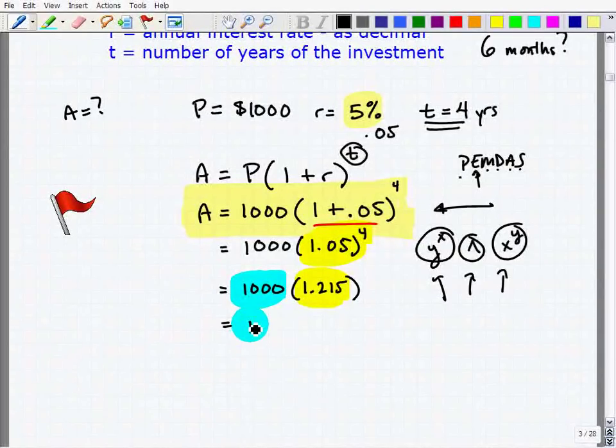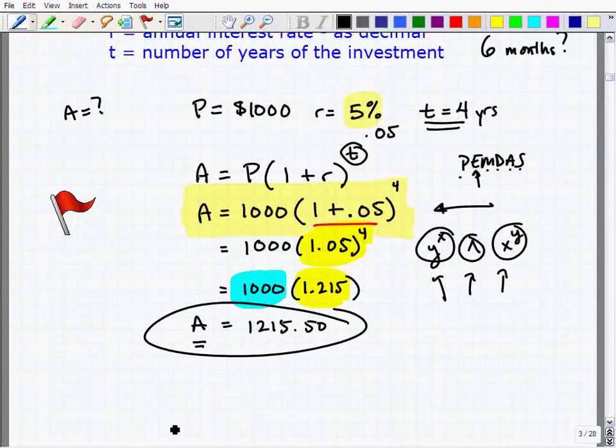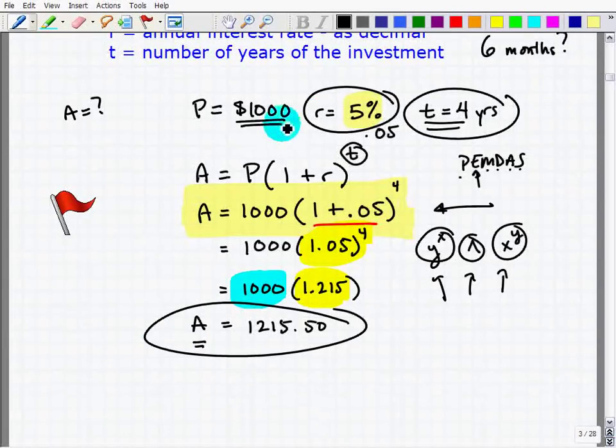So here we had $1,215.50. That's what A equals. So our total amount of our investment account after four years of investing 5% compound interest with the principal starting amount of $1,000, we now have $1,215.50. So subtract that from 1,000, and you can see we made $215 and 50 cents.